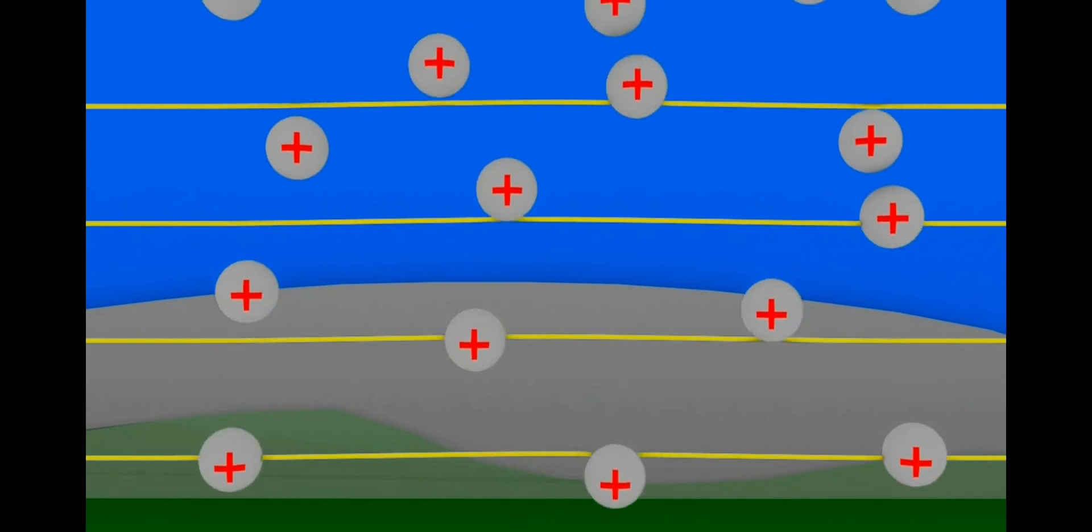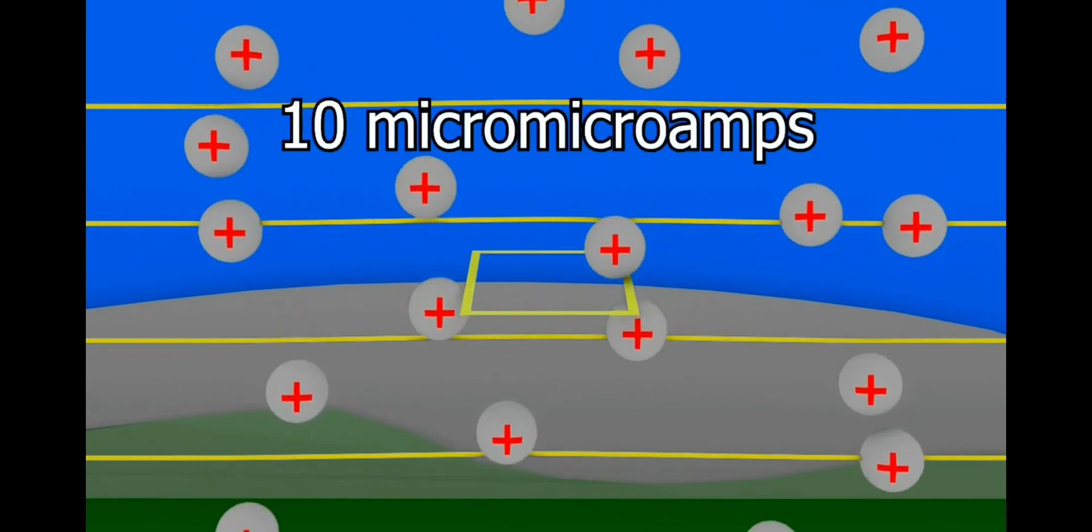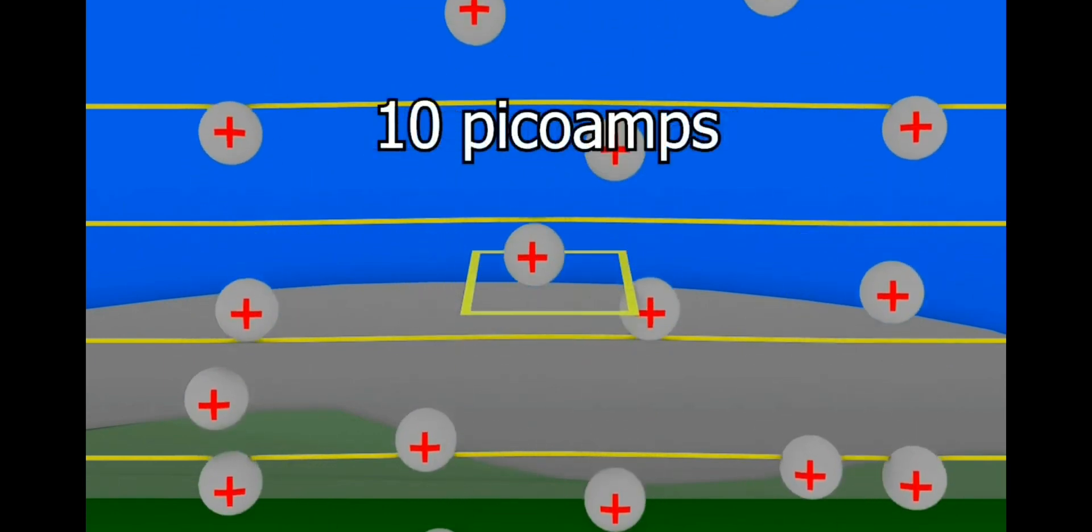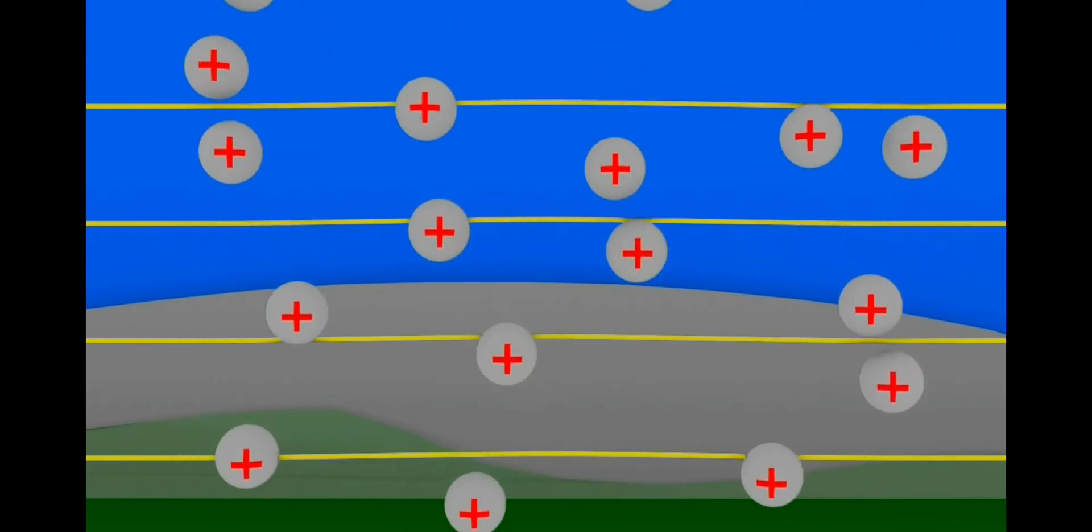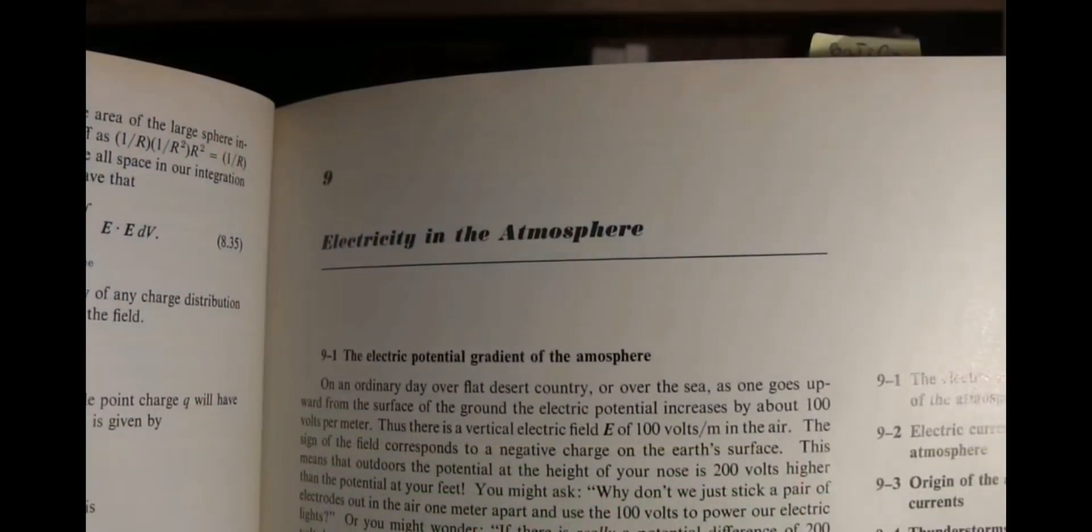The current density from these ions is very small, around 10 micro micro amps or 10 picoamps crossing each square meter or yard every second. So in any small area there's not a lot of power, and that's the explanation about atmospheric electricity adapted from Feynman's lectures.